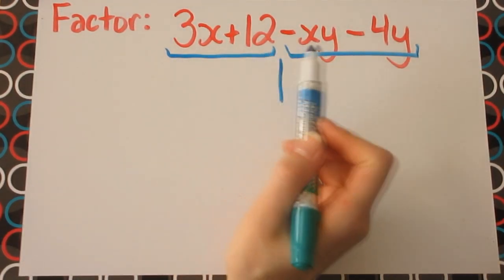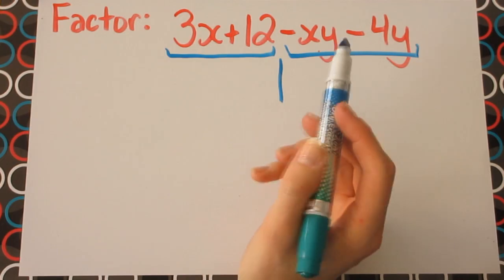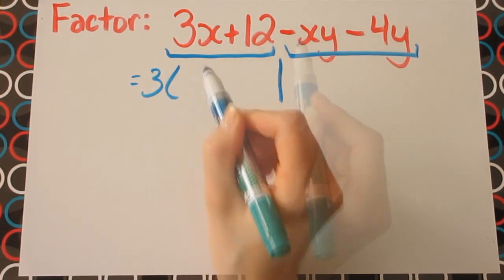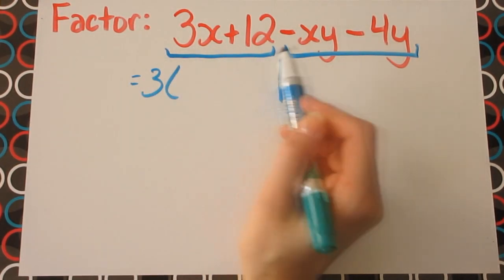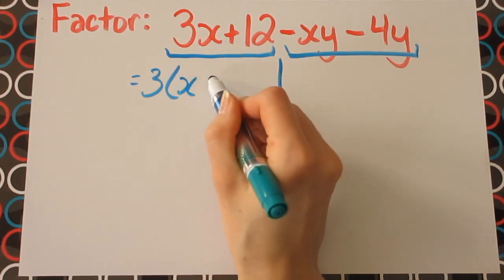So the common factor is fairly simple. We just have a factor of 3. And when you divide 3 from these two terms, we're just left with x plus 4.